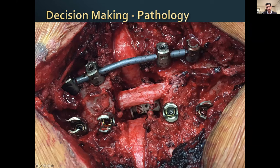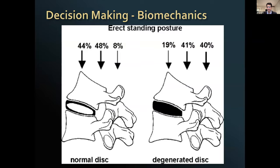We put in an expandable custom cage to provide anterior stability and decompressed the spinal cord circumferentially. This case also highlights the importance of understanding and taking into consideration biomechanics, because you don't want to overload the implants and hardware that you're putting in.